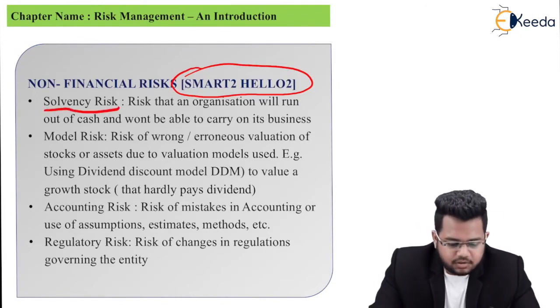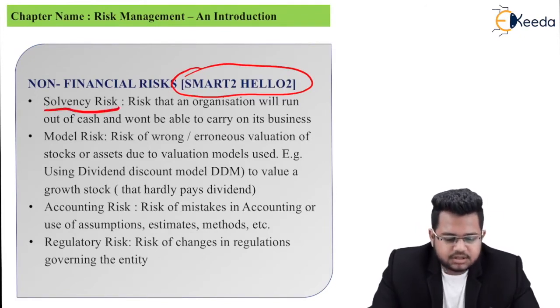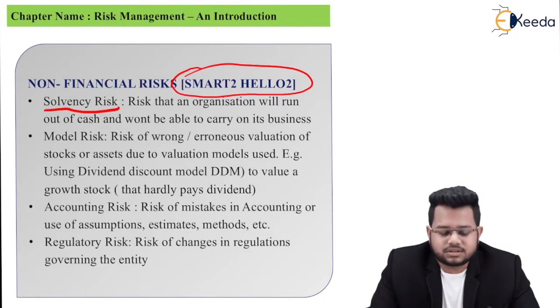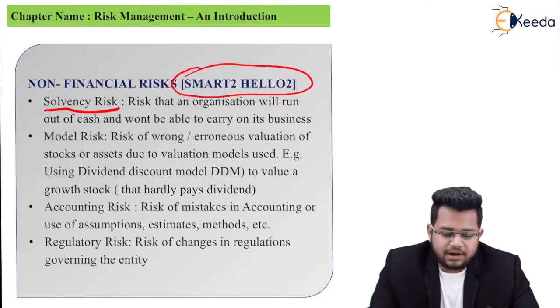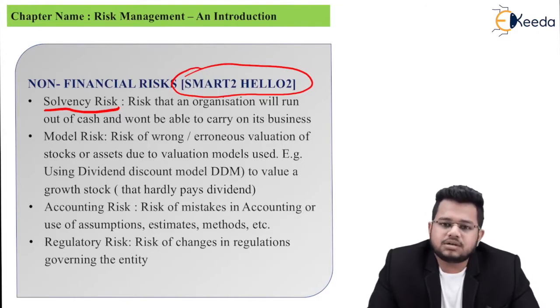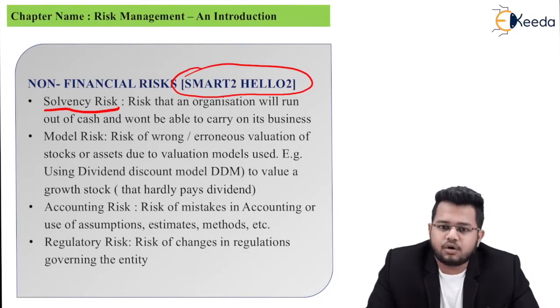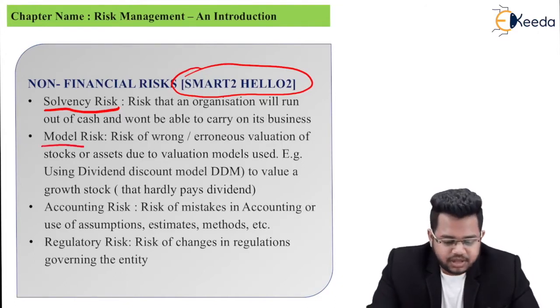S stands for solvency risk — the risk that an organization will run out of cash and won't be able to carry on its business; basically it becomes insolvent by running out of cash.